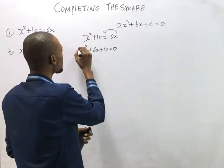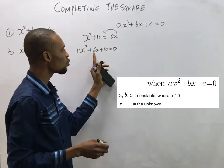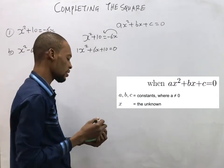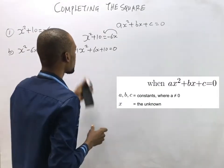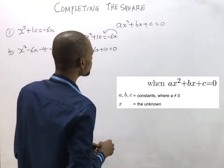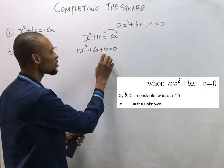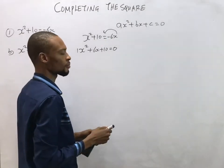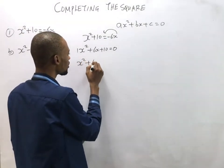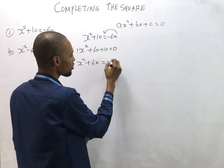Comparing to the standard form, a = 1, b = 6, and c = 10. Now, the first step in completing the square is to take the constant to the other side, leaving us with s² + 6s = -10.